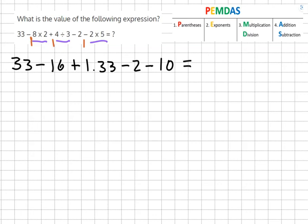So then we're on to addition and subtraction and we can just go from left to right. So 33 minus 16 equals 17, plus 1.33 minus 2 minus 10, which gives us minus 12.